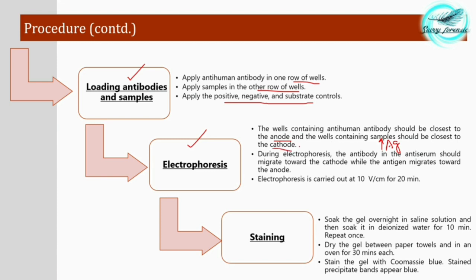During electrophoresis, the antibody in the anti-serum migrates toward the cathode, while the antigen migrates toward the anode. Due to their oppositely charged nature, they move toward each other. Electrophoresis is carried out at 10 volts per centimeter for 20 minutes as the standard procedure.